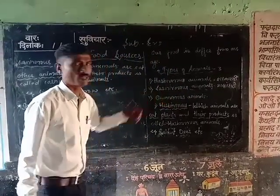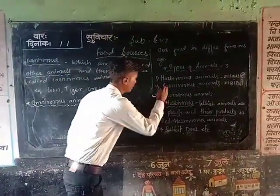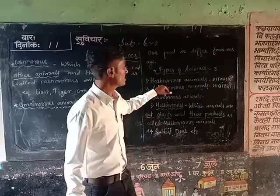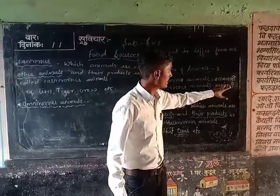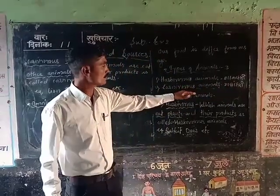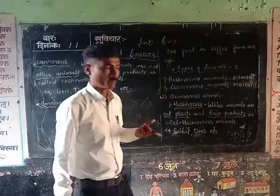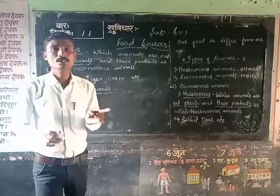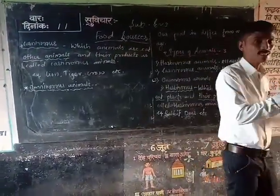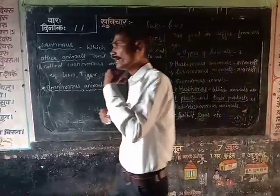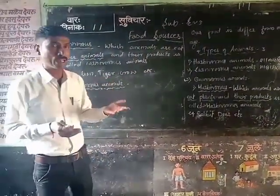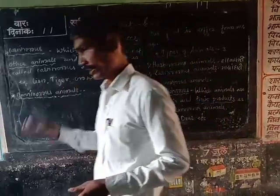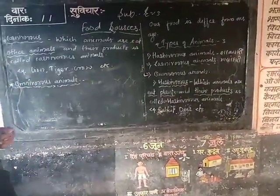So here the third one is omnivorous. Carnivorous animals means meat-eaters, and herbivorous means plant-eaters. Omnivorous animals eat both plants and animals and also their products. So in day-to-day life, so many animals eat plants and other animals and their products. That is called omnivorous animals.